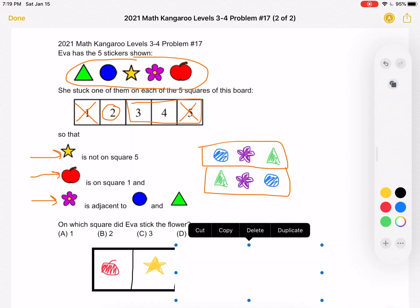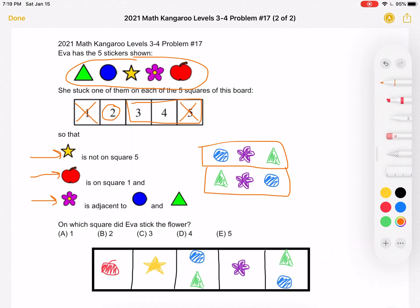Now, again, we have two options for the rest. We either have the circle, flower, triangle or triangle, flower, circle. But either way, we know where the flower is located.